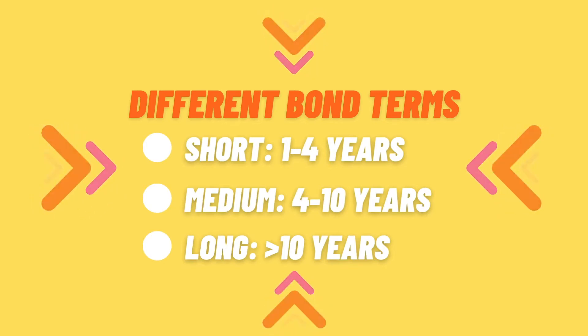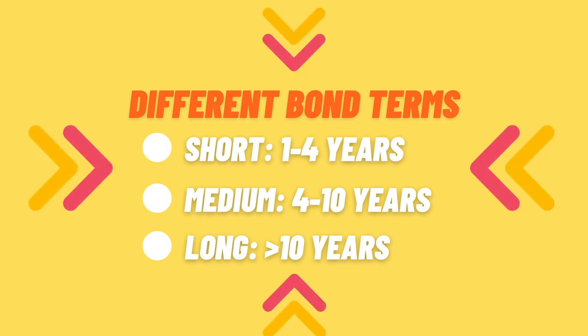Now we go into the topic of bonds — not James Bond, just to clear that up. Bonds are investors lending money to a government or a company that requires funding for a particular project or objective. The company or government comes to you and says, 'I need money for this project — if you lend me £1,000, I'll pay it back to you with interest on top.' With a bond there are three different terms: a short-term bond is about one to four years, a medium-term bond is four to ten years, and a long-term bond is ten or more years.